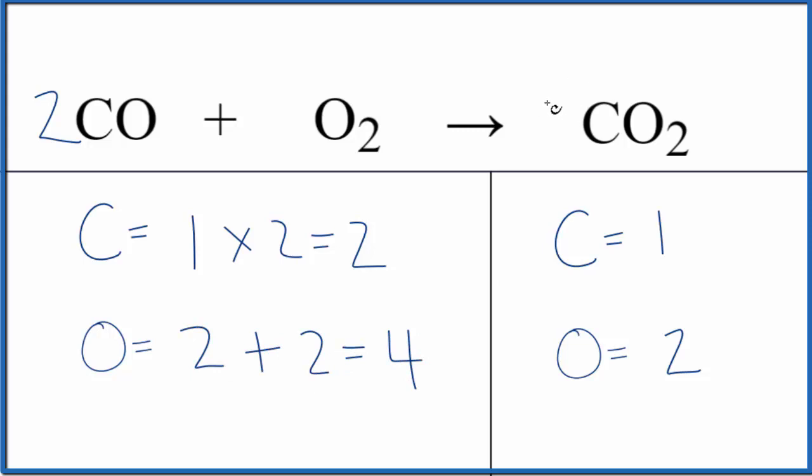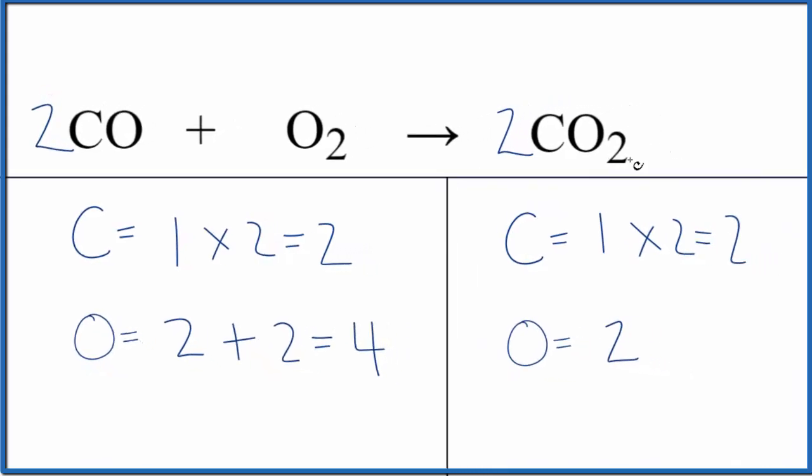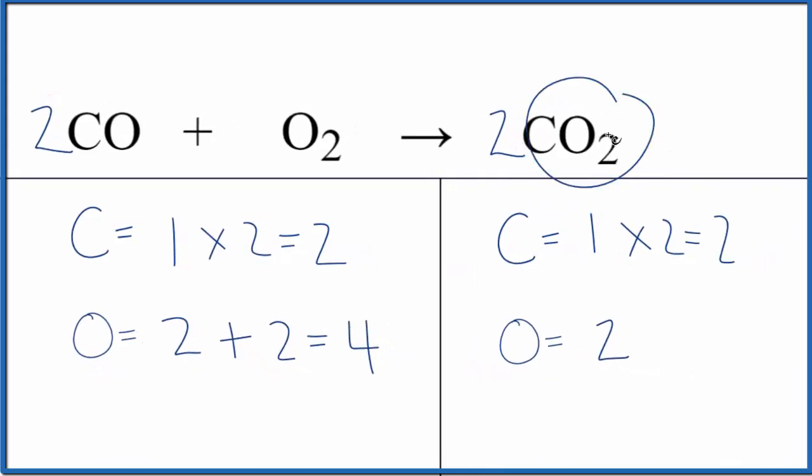If we put a coefficient of two in front of the carbon dioxide, we'd have one times two. So that would be balanced. And then the two goes to everything. Two times two, that gives us four. We're done. This equation is balanced.